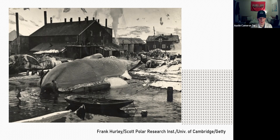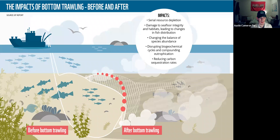A common method used in the past was bottom trawling, which involves taking a large net and dragging it along the seafloor. This scoops up populations of fish but also destroys habitats. Another popular method was damming rivers to trap fish populations, which allowed for easily controlled growth and harvesting of fish.